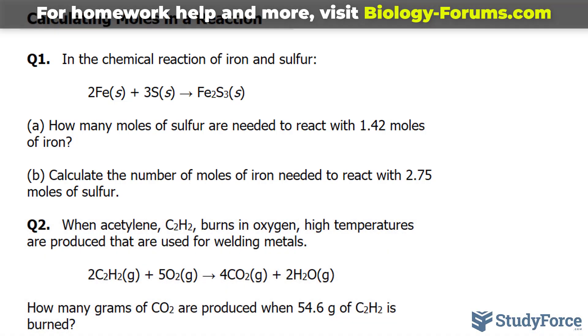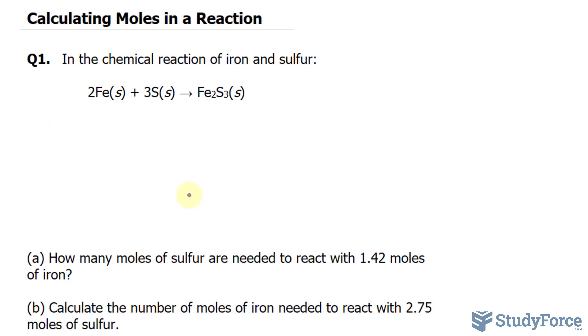The key to answering these types of questions is organization. So we want to organize our work by writing out everything we know. We're being told that there are 1.42 moles of iron. So over here, we'll write down N, which is the letter we're using to represent moles, is 1.42 moles. And what we're looking for is the amount of moles of sulfur. So I'll just write down N with a question mark here.